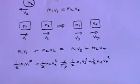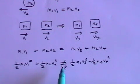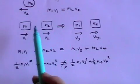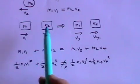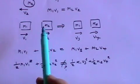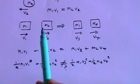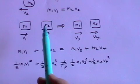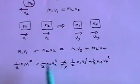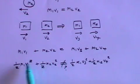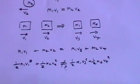Why may that not be the case? Because some energy may have escaped in another form. When the two bodies collided, maybe they made a sound, or there was some heat, or some friction — all of that is energy lost from the kinetic energy equation. Energy is always conserved, but not necessarily as kinetic energy.